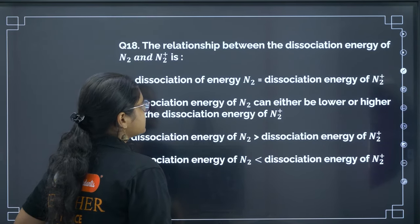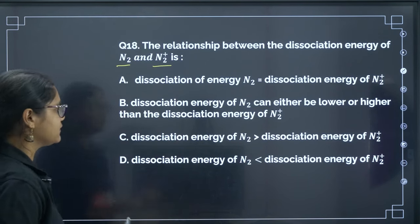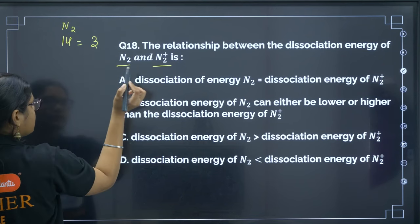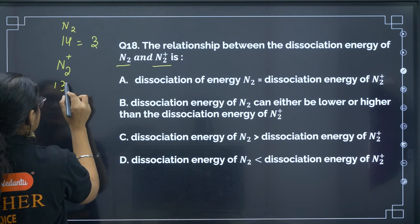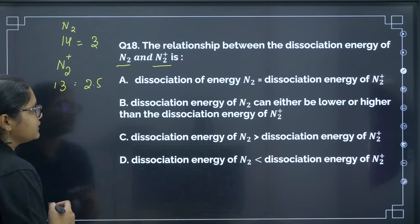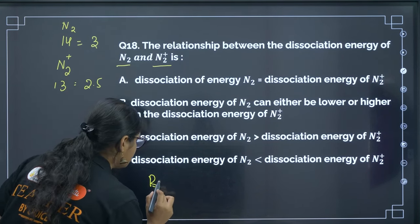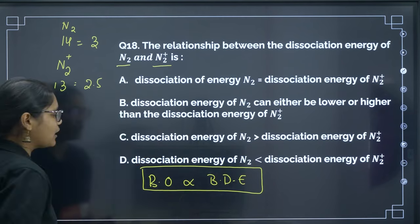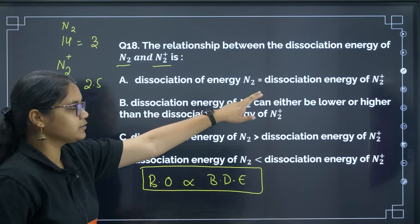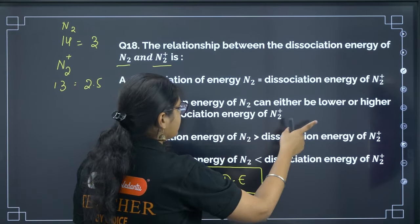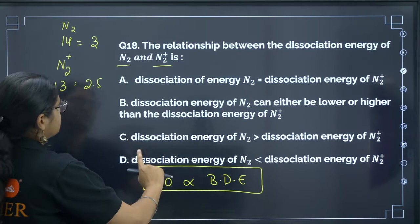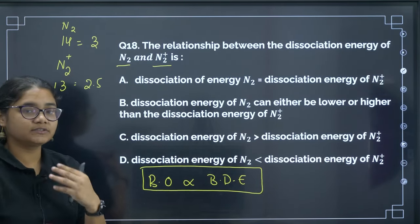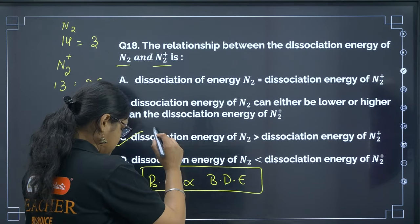Next: the relationship between dissociation energy of N2 and N2⁺. N2 has 14 electrons → bond order 3. N2⁺ has 13 electrons → bond order 2.5. Bond order is directly proportional to bond dissociation energy. Since N2 has a higher bond order, its dissociation energy is greater than that of N2⁺. The correct answer is option C.